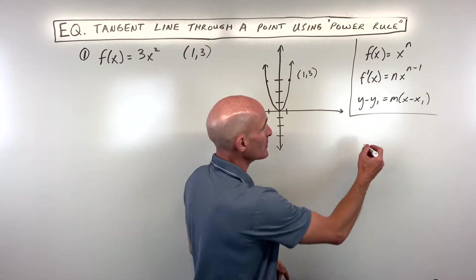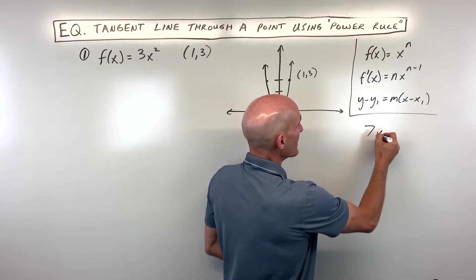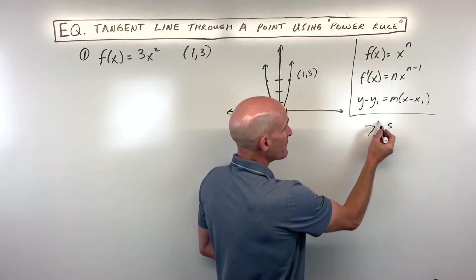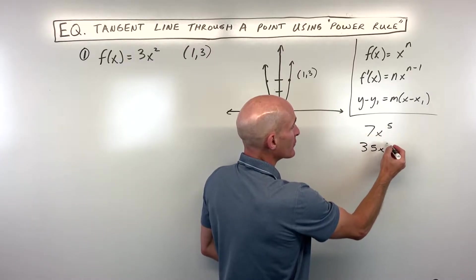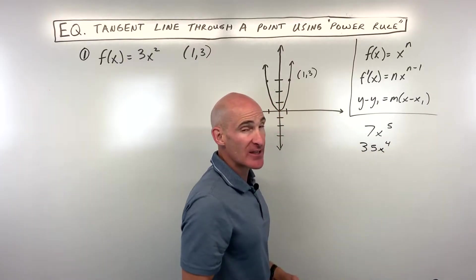A simple example would be if you had 7x to the fifth. You would bring that five down, five times seven is 35, and then subtract one from the exponent, so that'd be four. So that's your derivative.